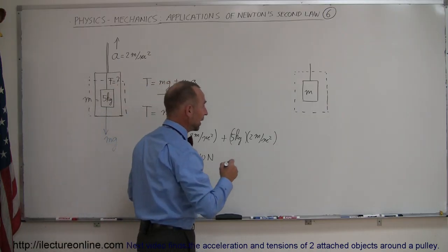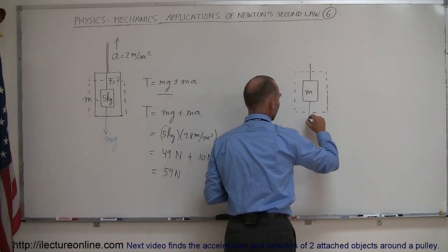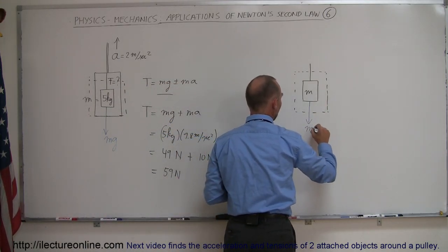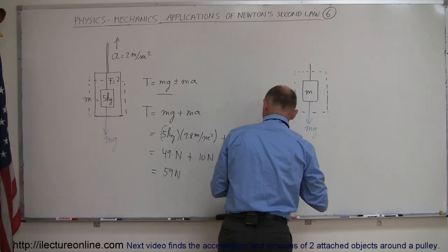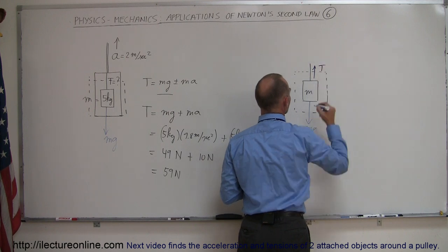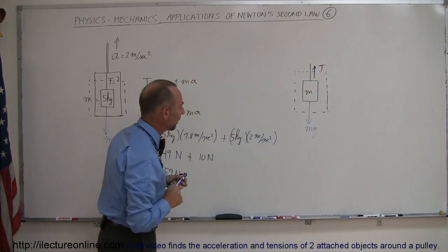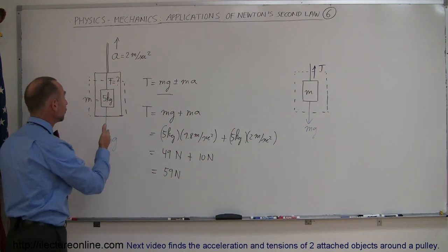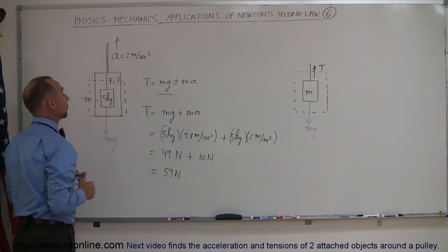Well, for one, we have the weight pulling down, so this would be mg, and then we have the tension pulling upward. Now, since the object is moving or accelerating upward at 2 meters per second squared,